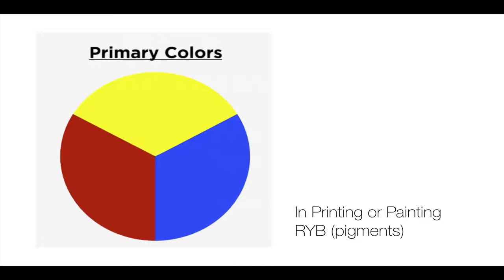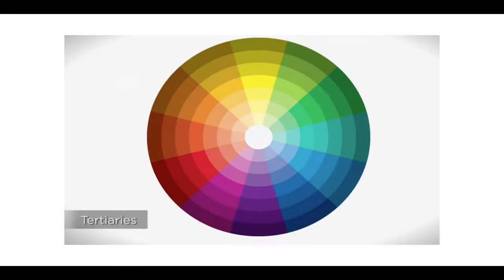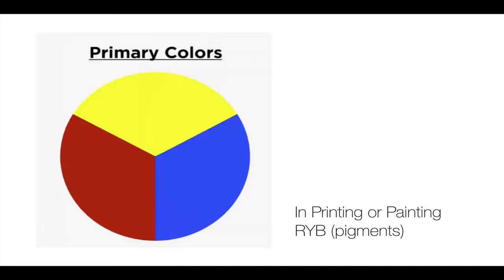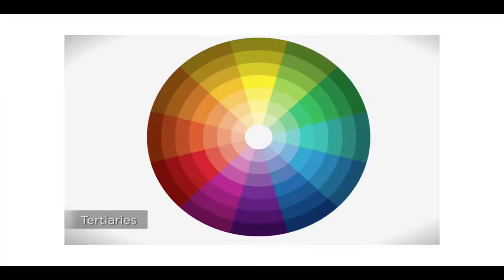The thing to understand about the color wheel is that when you take the three primary colors and mix two colors that are next to each other — for example, if you mix red and yellow you get orange, or if you mix yellow and blue you get green. If you keep mixing colors next to each other, you get more and more colors. Starting with primary colors, mixing two adjacent primaries gives secondary colors, and mixing adjacent secondary colors gives tertiary colors.